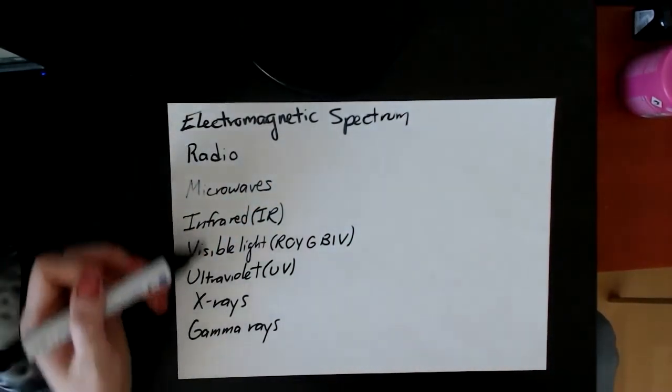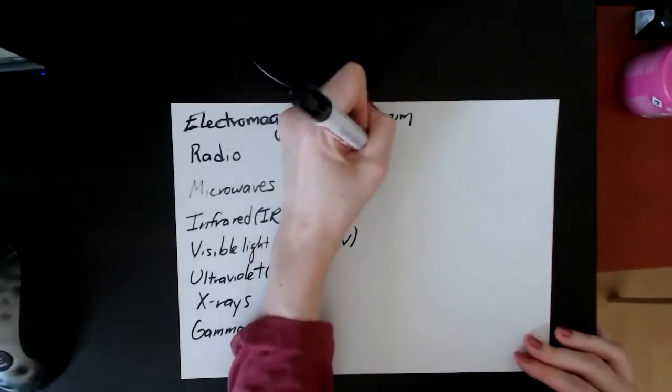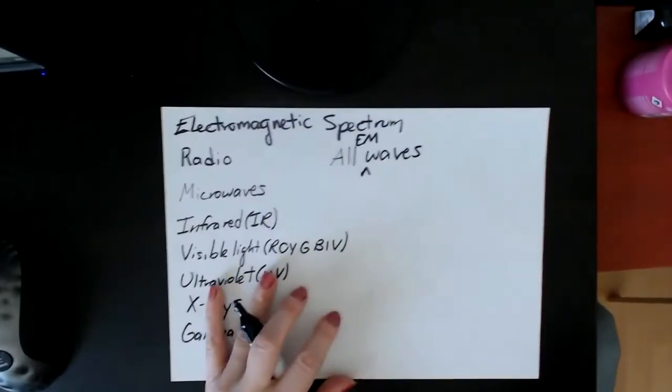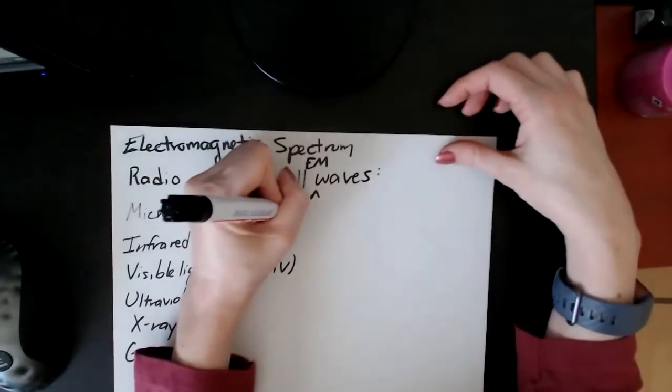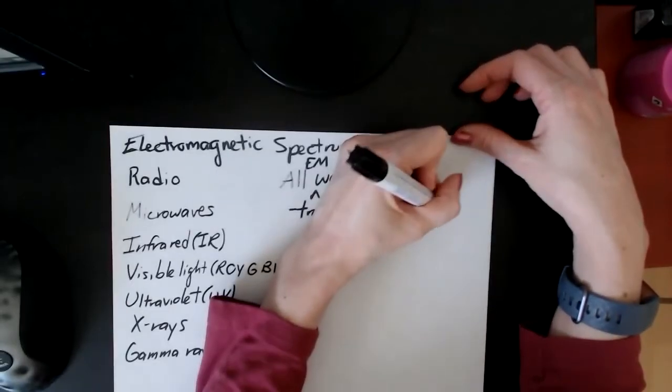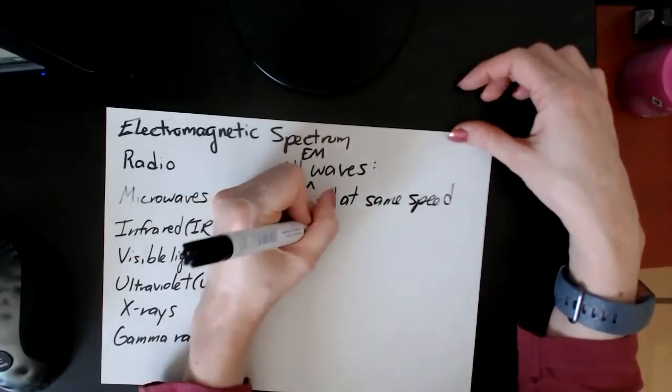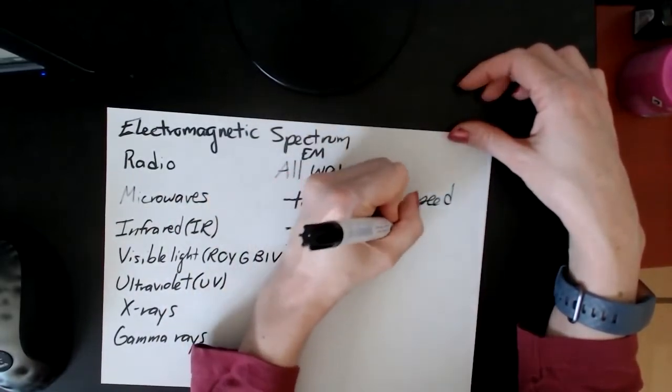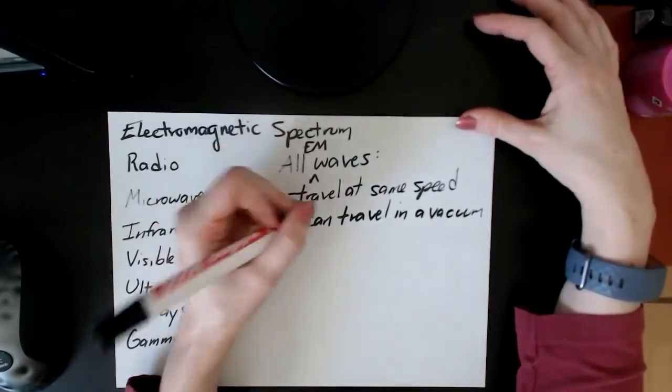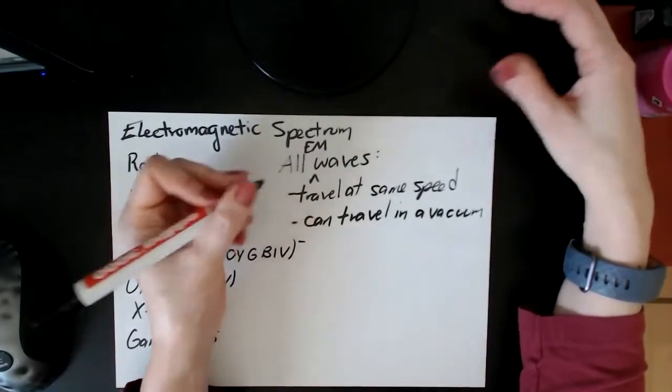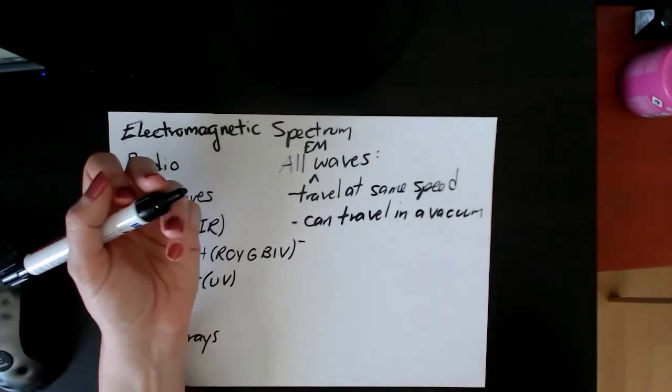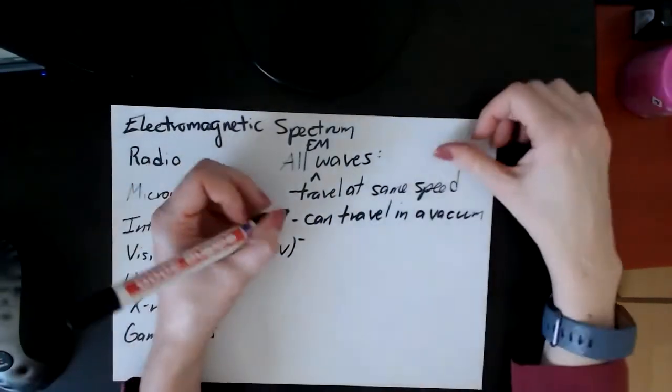The idea is that all of these waves, all EM waves, travel at the same speed, and that's not the only thing they have in common. They all have several things in common. So they all travel at the same speed in a vacuum. They can travel in a vacuum, so they don't need a medium to go through. They're capable of traveling without any particles or matter around. They can all be reflected and refracted, just like any other wave. They all carry energy, which is the basic definition of a wave. They are all transverse.